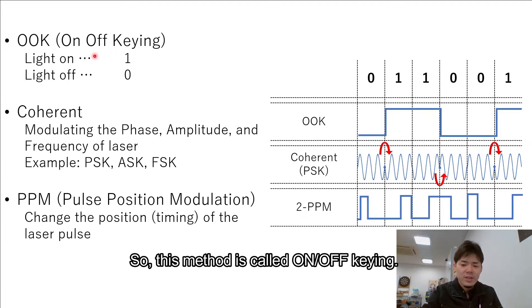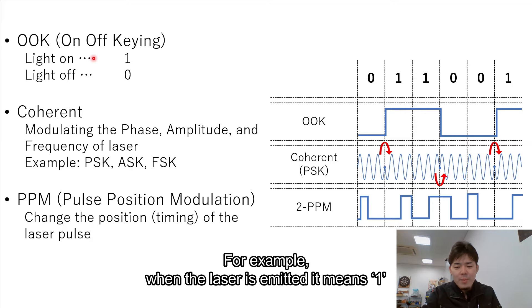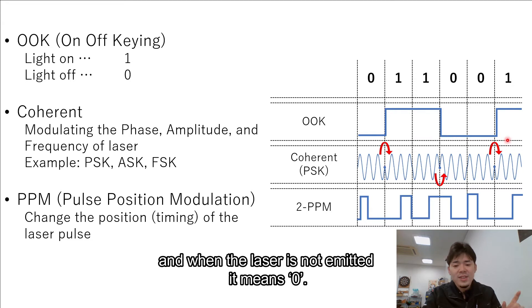So this method is called On-Off Keying. For example, when the laser is emitted, it means one. And when the laser is not emitted, it means zero.